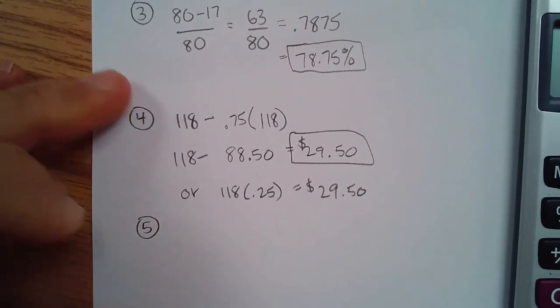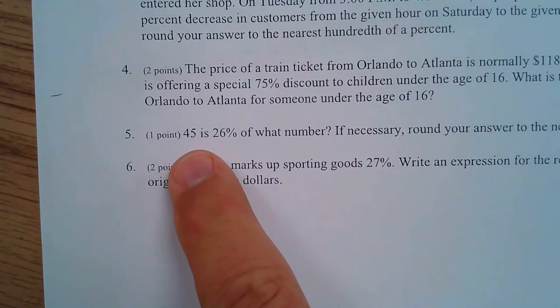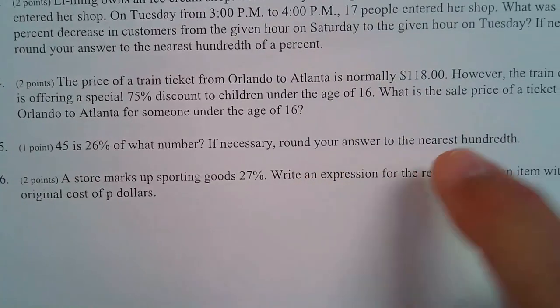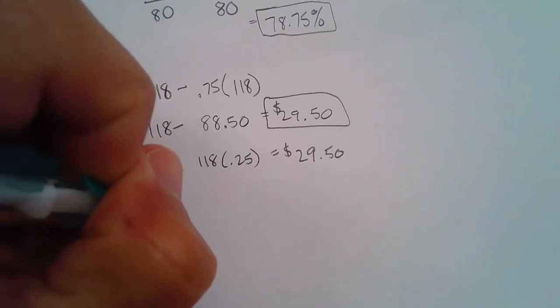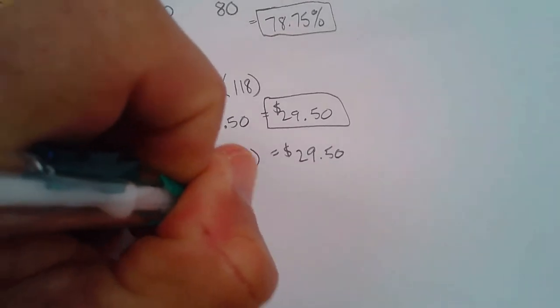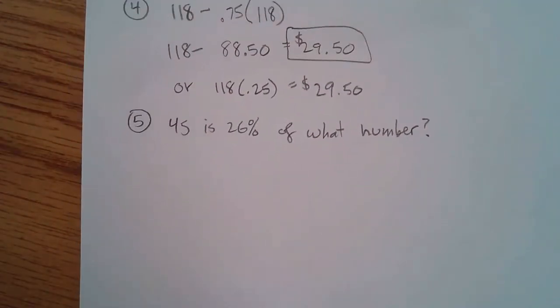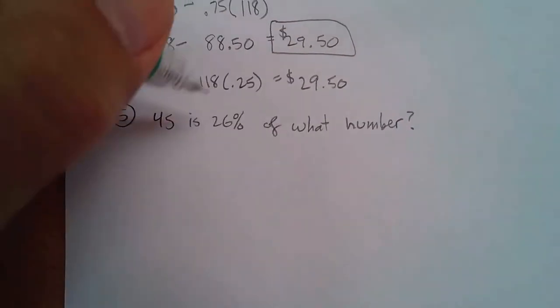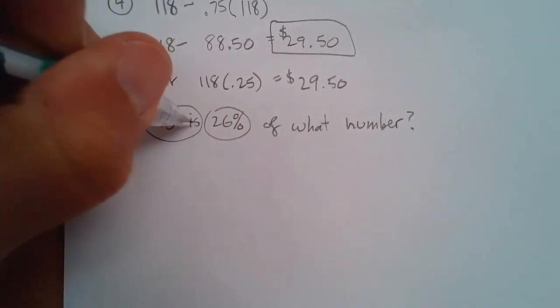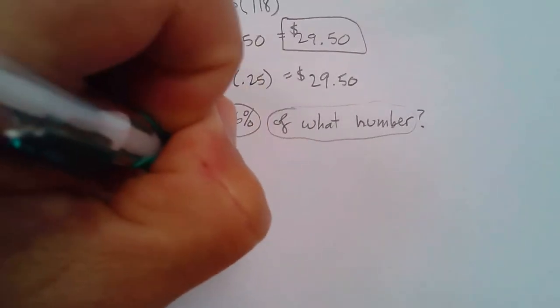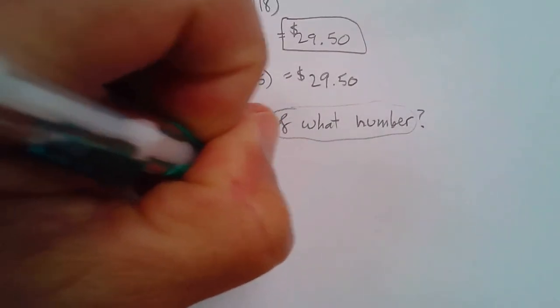Number five: 45 is 26% of what number? Round your answer to the nearest hundredth. I like to circle the '45 is' and 'of what number,' because that sets us up for the proportion P over 100 equals 'is' over 'of.'